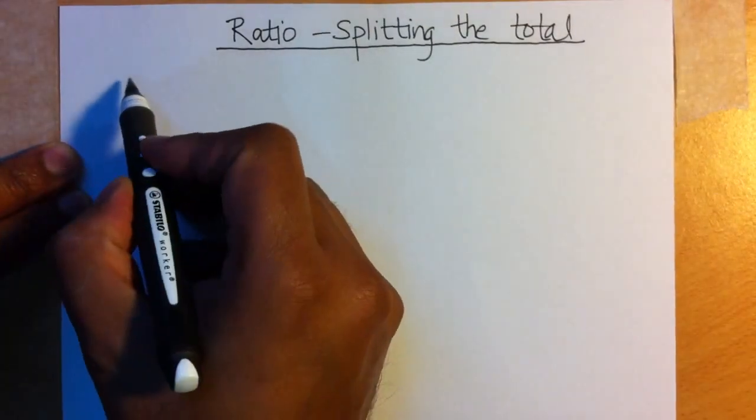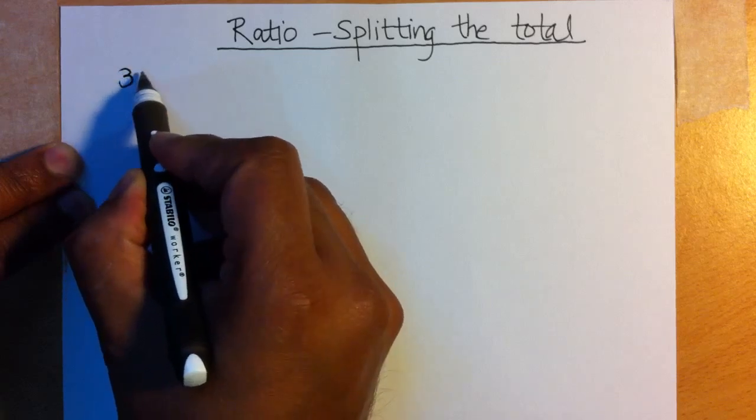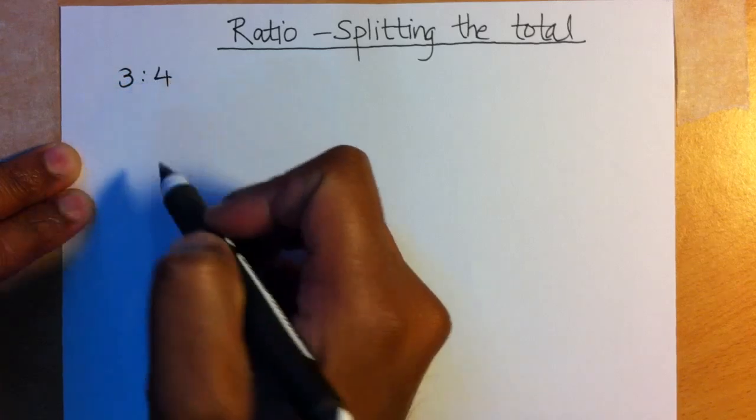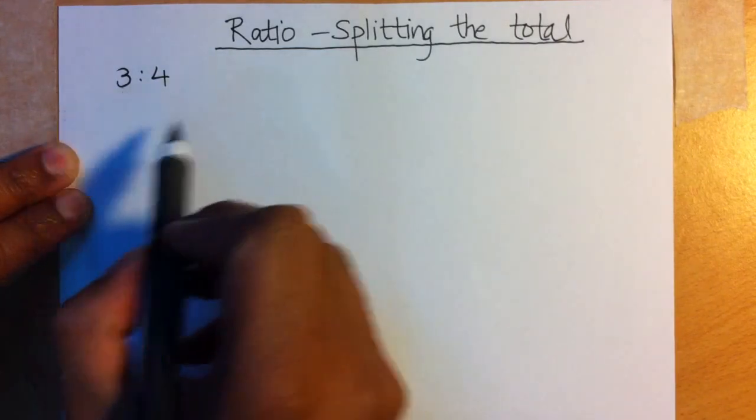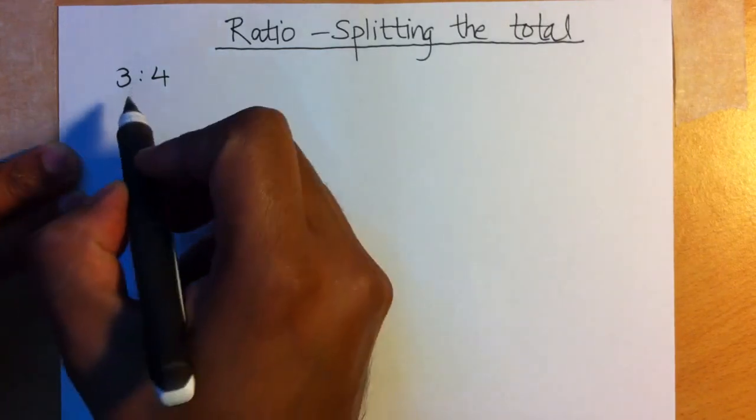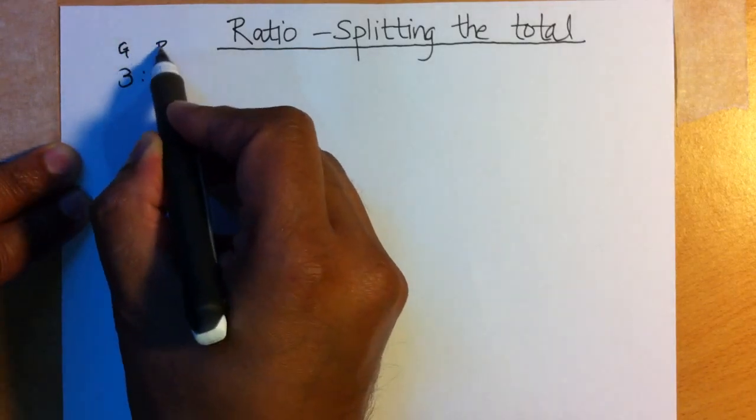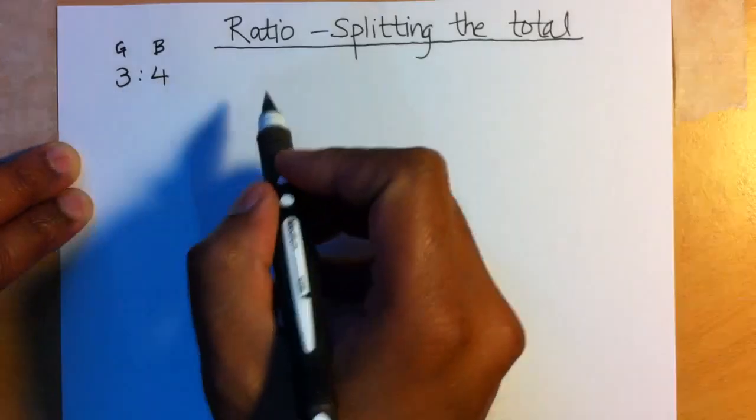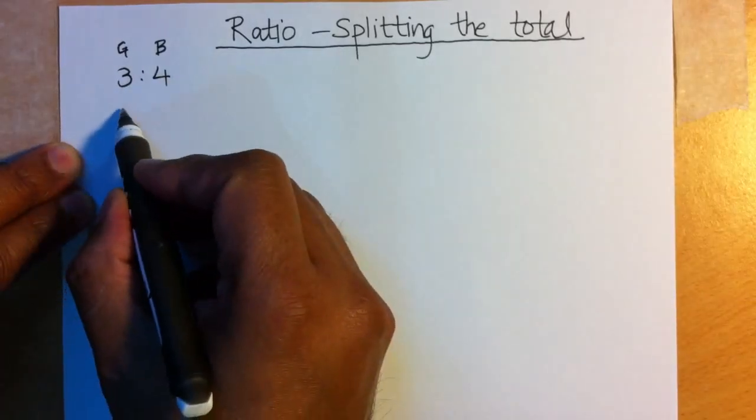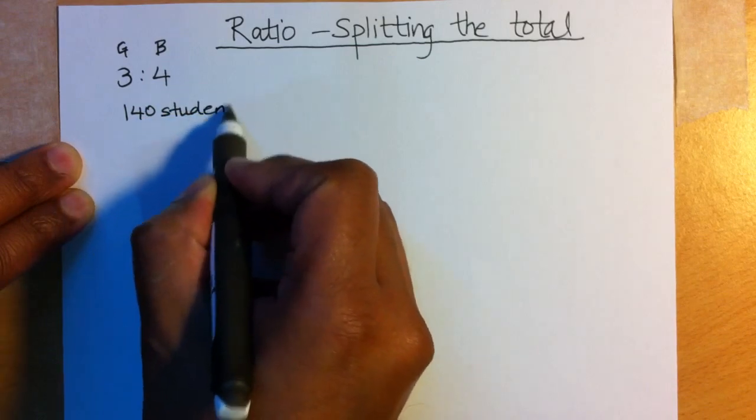As an example, we have a school in which the ratio of girls to boys is 3 to 4. So in these questions, I like to put the information in a nice concise form. So I'm going to use the symbol G and B. So the ratio of girls to boys is 3 to 4, and we've been told that there are 140 students in total.